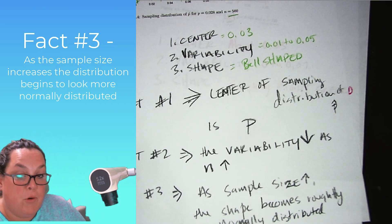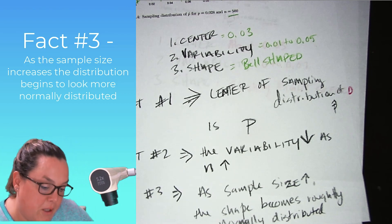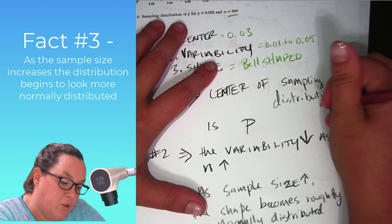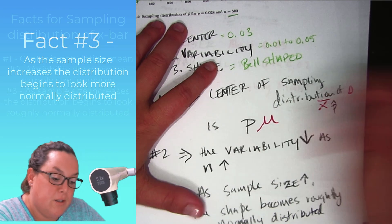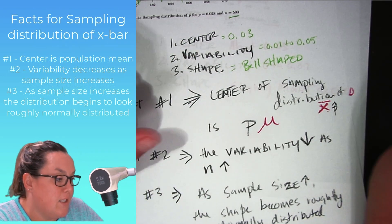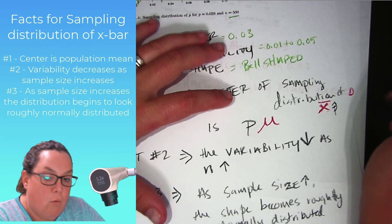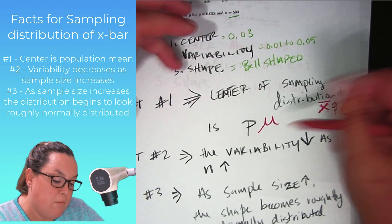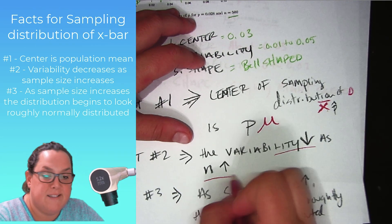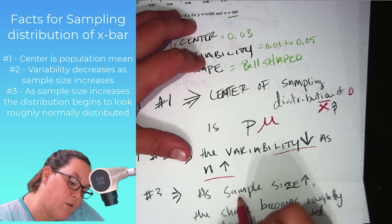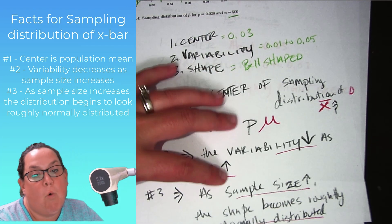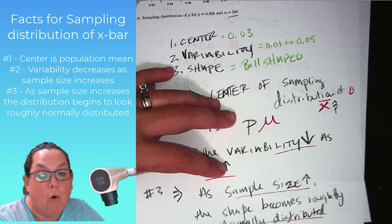The same would be true for the sampling distribution of x-bar. The center of the sampling distribution of x-bar would be mu — all the x-bars center themselves around mu. We would also notice that the variability would decrease as sample size increased, and that as sample size increases, the shape begins to be more and more normally distributed.